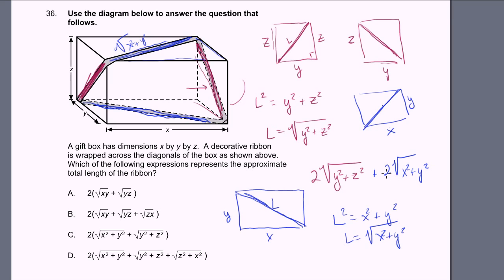So the total length of the ribbon is 2 times the square root of x squared plus y squared, plus 2 times the square root of y squared plus z squared. That looks like choice C — they just factored the 2 out, so it's 2 times the square root of x squared plus y squared plus the square root of y squared plus z squared. Next problem.